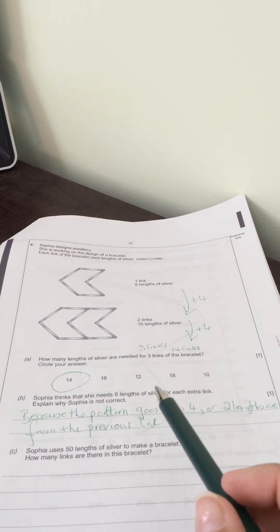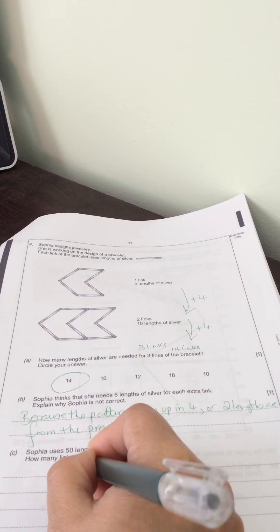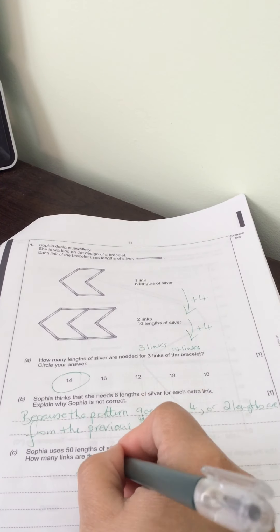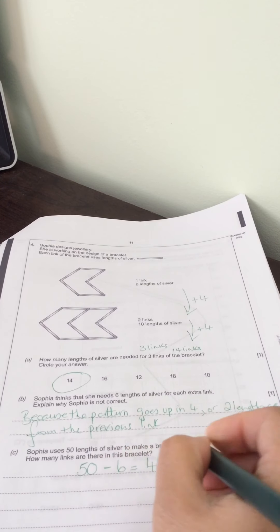And the first link has six in it. So if we say that there are 50 lengths, minus the first link, which is six, so that means there's 44 lengths.